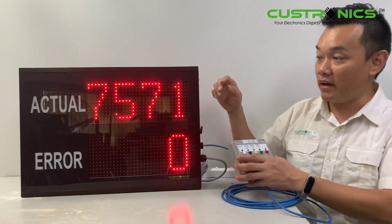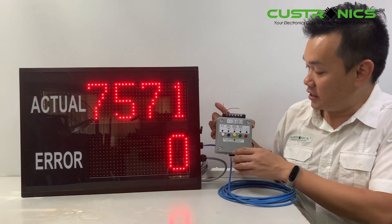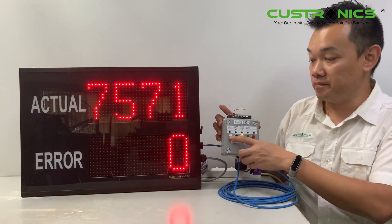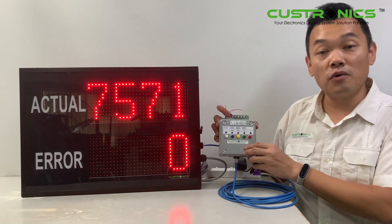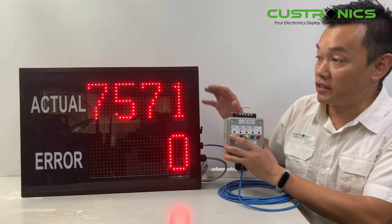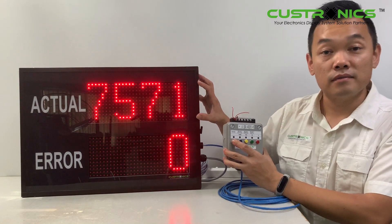This is the keypad for the display panel. You can see the count modes: 1, 100, 10, and 1. Let's start. To count from 7571, this is the target.